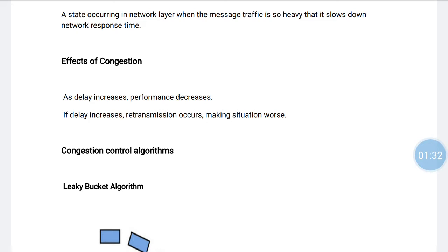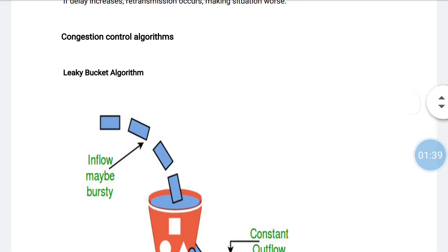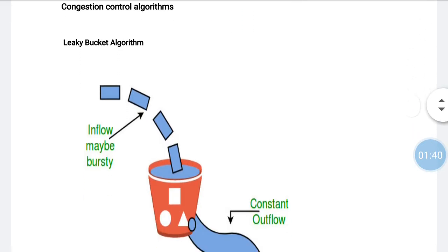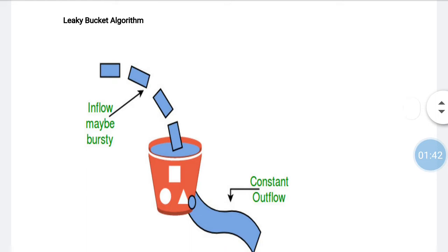We have two types of algorithms: the leaky bucket algorithm and the token bucket algorithm. In the leaky bucket algorithm, we can see the diagram to understand it. We have one bucket and the bucket has a hole.